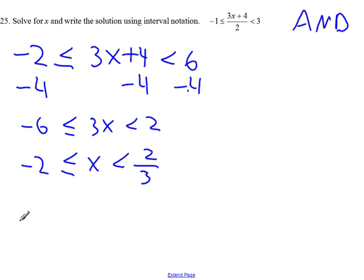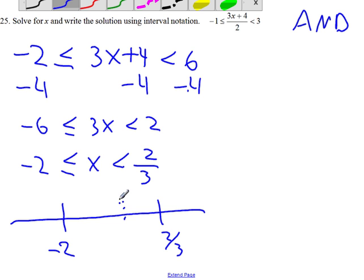It helps to graph it. Alright, there's negative 2 somewhere. Somewhere here is 2 thirds. And just for reference, we can put 0 here somewhere.